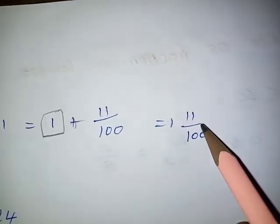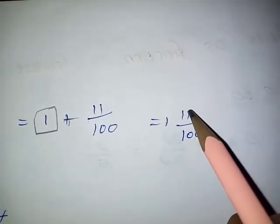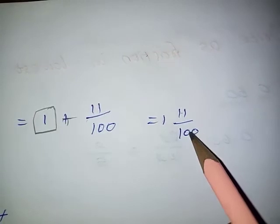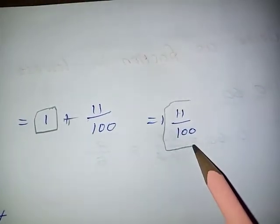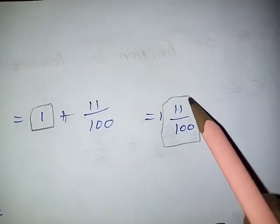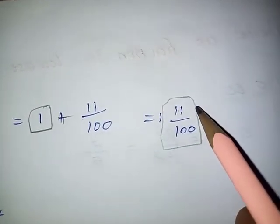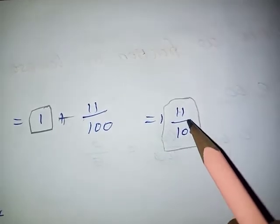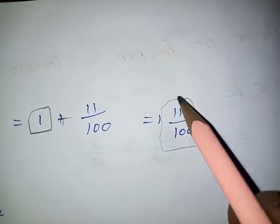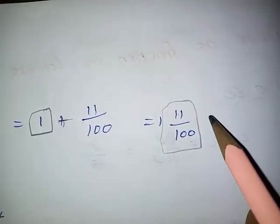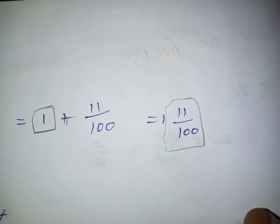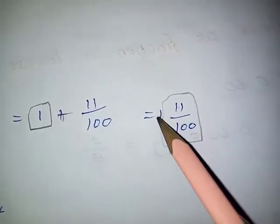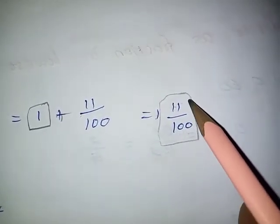Here, we only simplify the numerator and denominator of the decimal part. But in this sum there is no common factor, so the required fraction of the given decimal is 1 and 11 by 100.